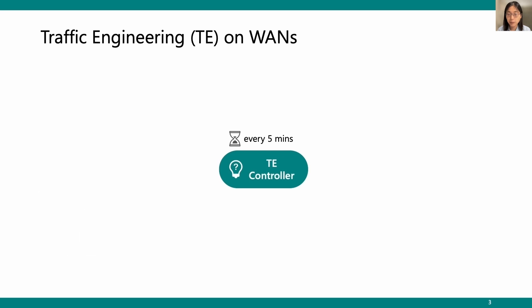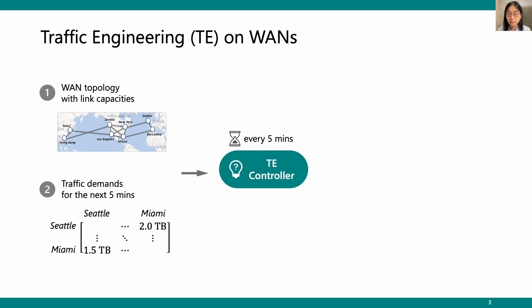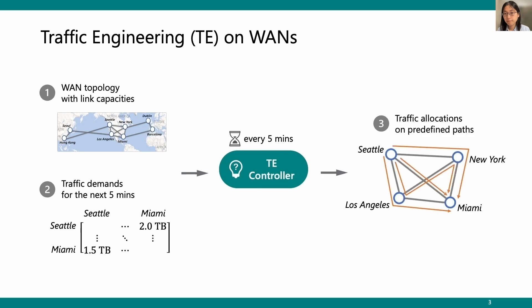For every 5 minutes, the TE controller takes in Wide Area Network topology with link capacity, as well as traffic demands for the next 5 minutes, such as 2TB from Seattle to Miami. The TE controller outputs traffic allocations on a predefined path. For example, there could be 4 paths from Seattle to Miami, and the TE controller will decide how much traffic is on each of these 4 paths.